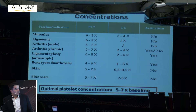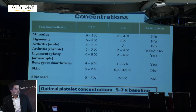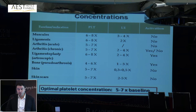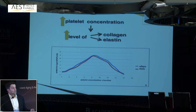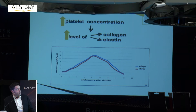This is our study showing a theoretical approximation of the optimal PRP concentration for each tissue. The skin needs a concentration five to seven times baseline. For pure rejuvenation, you don't need leukocytes in the substrate, but for skin scars you do need some leukocytes. We performed punch biopsies before and after PRP treatment, confirming that at two times baseline you get some effect, but at 16 times baseline the effect is actually lower than at two times.